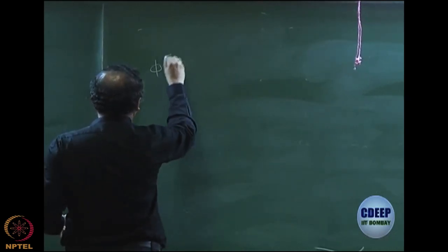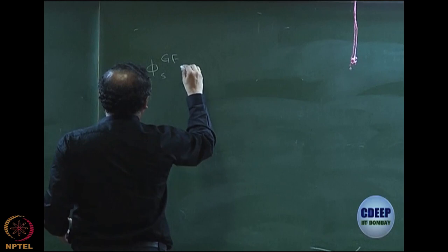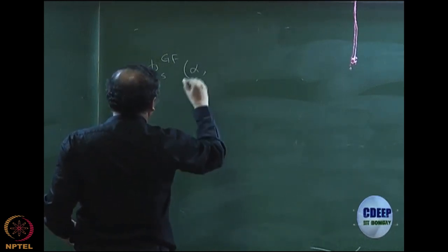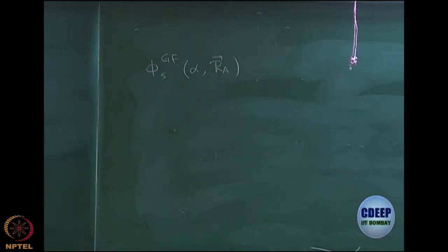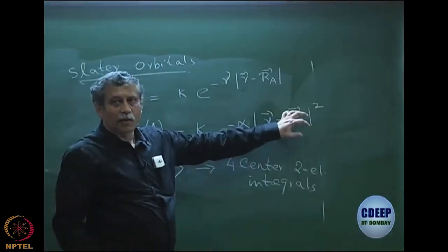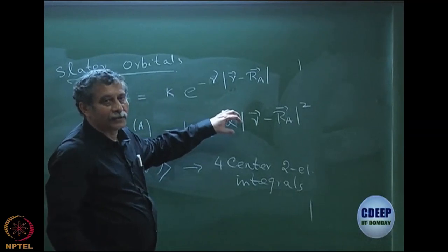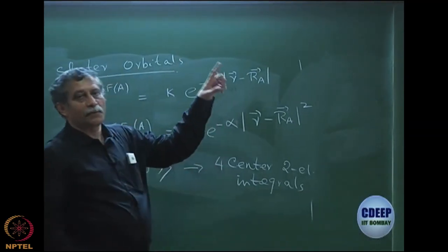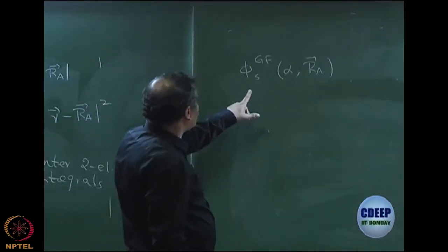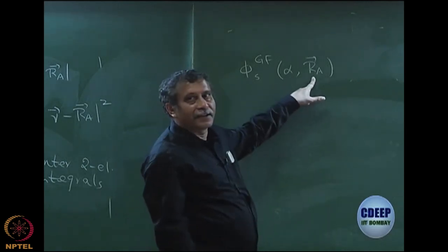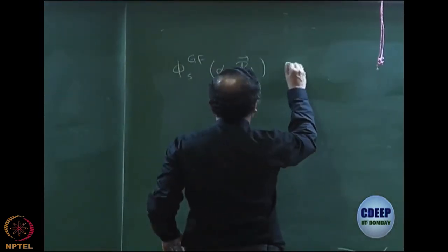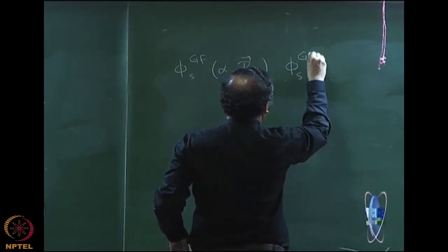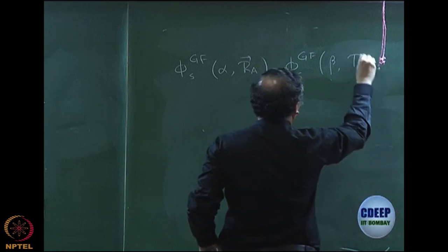Consider an S-type Gaussian with exponent alpha and center R_A. Some nomenclature: R_A is the center, and alpha is called the exponent — an important name because it appears under the exponential. Now, let us say I have one S-type Gaussian with exponent alpha and center R_A, multiplied by another S-type Gaussian with exponent beta and center R_B — just as mu is centered on A and nu is centered on B.